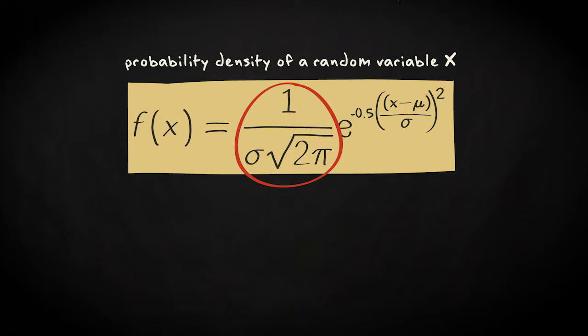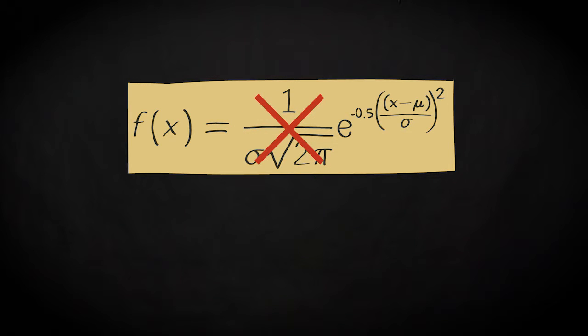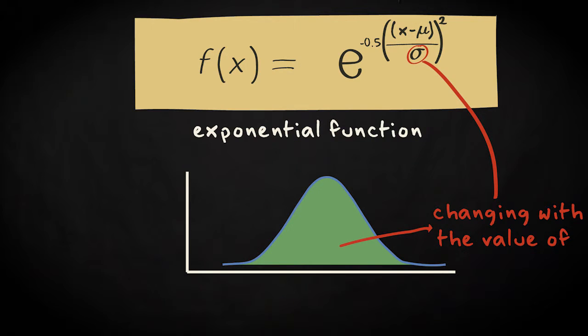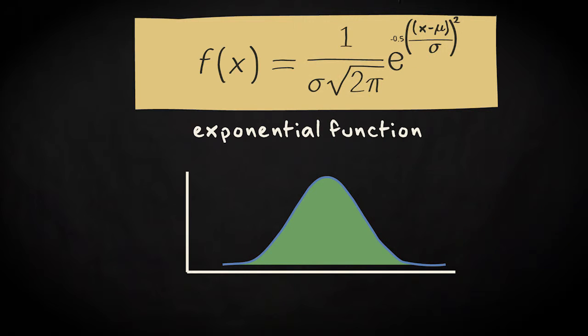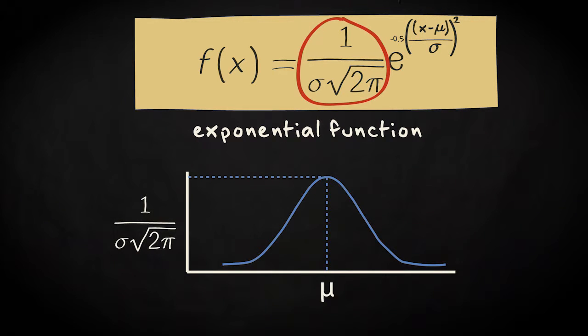Now let's focus on the constant in front of e. The exponential function without the constant has a surface under the curve that is changing with the value of sigma. But when multiplied with this constant, it has a value of exactly 1. The value of the constant is in fact the height at the top of the curve, where x equals mu.